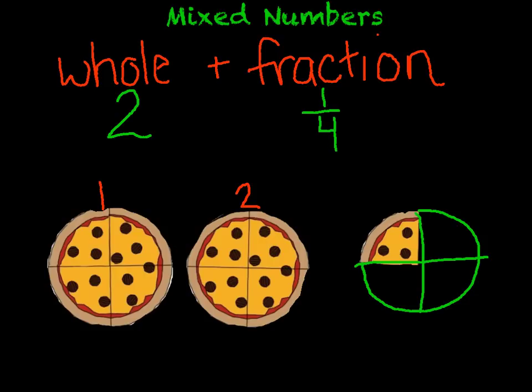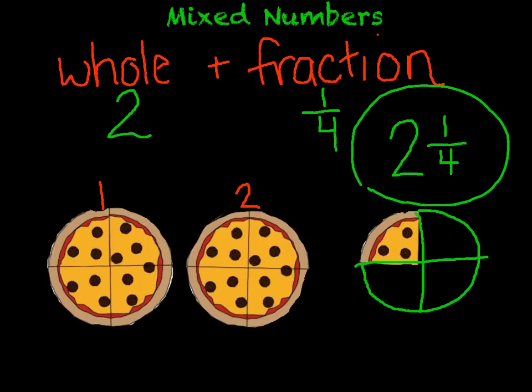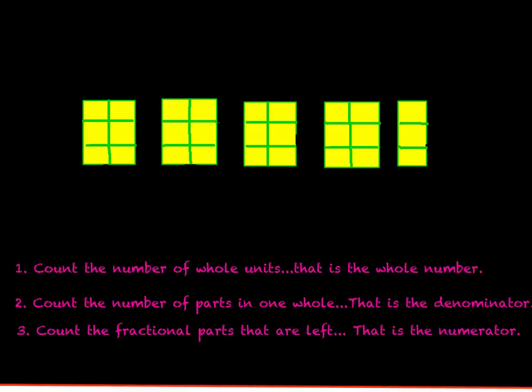So our whole number is 2, and our fractional amount is one-fourth. And when we put it together, our mixed number is 2 and one-fourth pizzas. All right, let's do a practice one here.